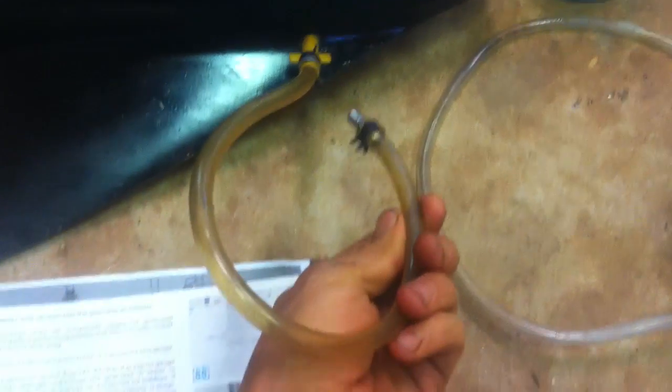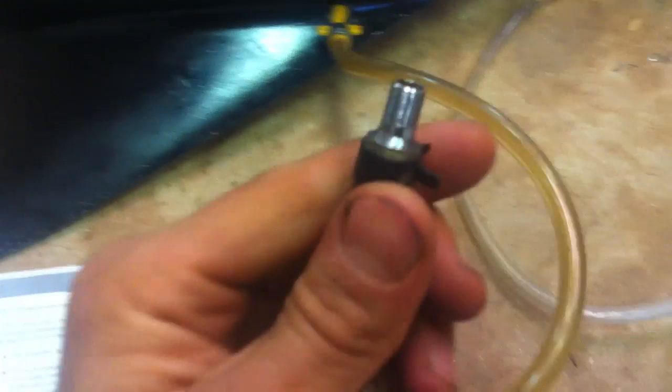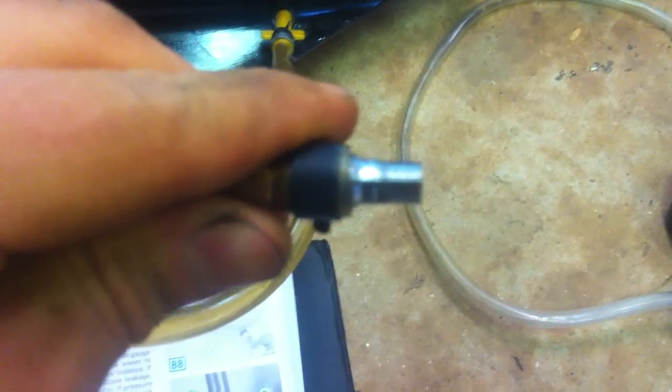Alright, here's how you pressure check and vacuum check a lower unit. I made this up from a lower unit oil pump. I just took the oil pump fitting off and cut this old Schrader valve, bicycle valve, and jammed it in there.